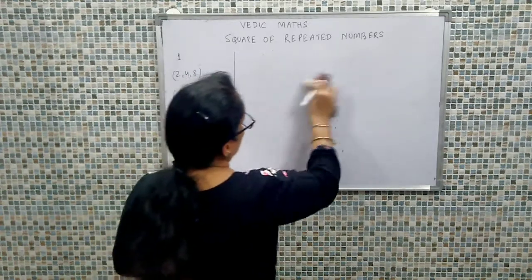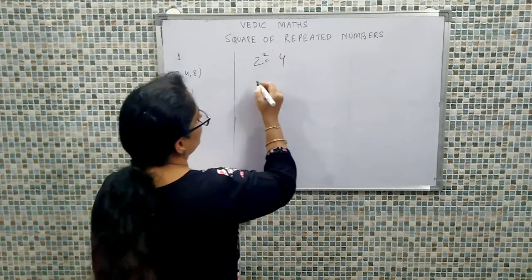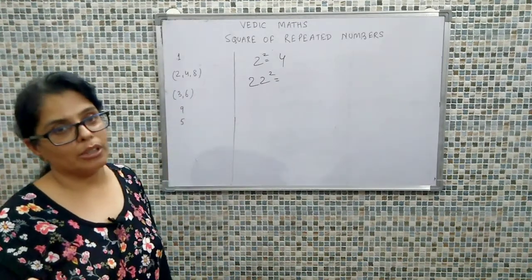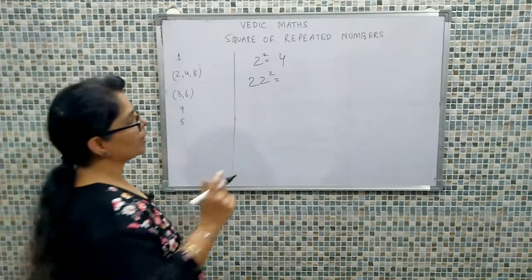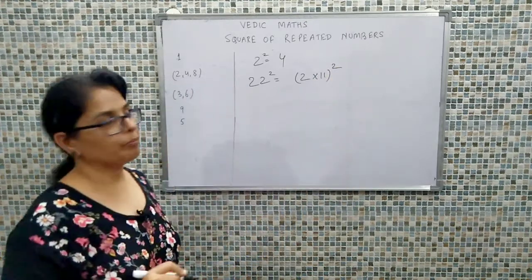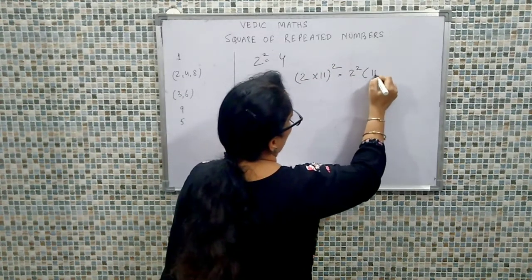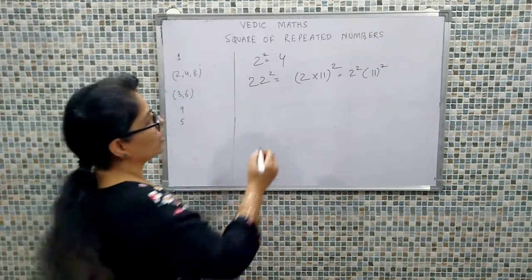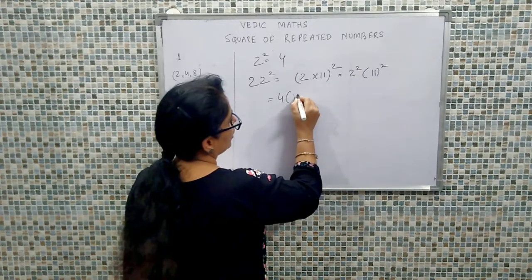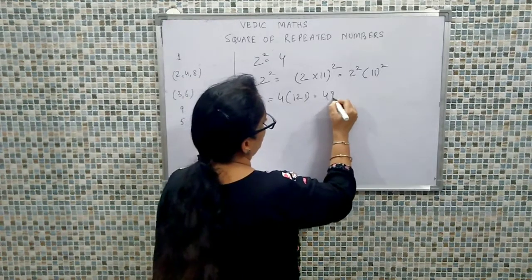Now taking the second case — square of 2. Square of 2 kya hota hai? Four. Ab hum 22 ka square par aate hain. We can write it as two into eleven ka whole square. So this is two ka square and eleven ka square. Two ka square is four, and eleven ka square is 121. So four into 121 gives us 484.